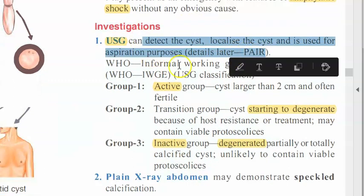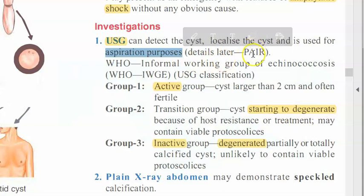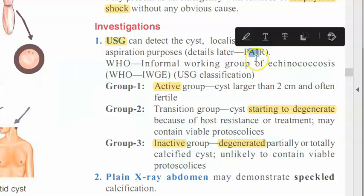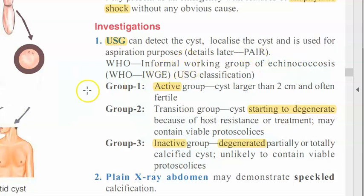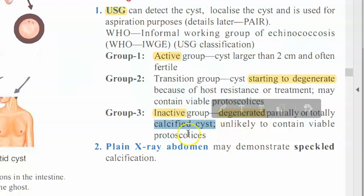Investigations you can do include ultrasound, which will detect the cyst and can also be used to localize and aspirate it. Using ultrasound you can find out whether the cyst is active or inactive. Inactive means it is degenerated or calcified — you don't have to do anything. Active means it is fertile and large, not shrinking. You can also do abdominal X-ray, and in select cases a CT scan.